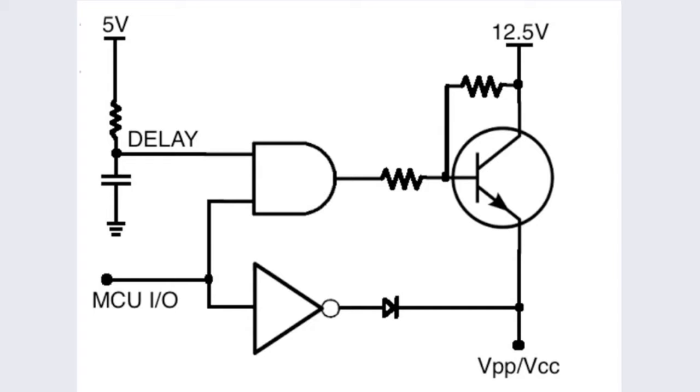The power up delay time with the input to the AND gate held low makes it impossible for the AND gate to initially switch 12.5 volts to the EEPROM programming pin.